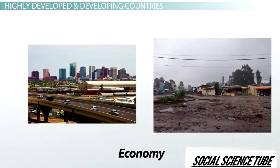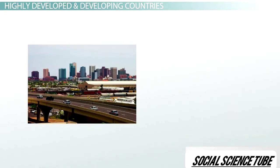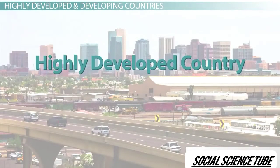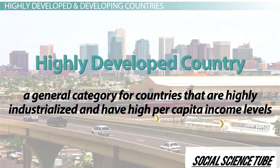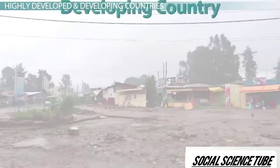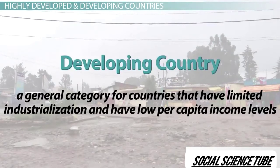The economies of these two countries are one major characteristic that sets them apart. The United States is considered a highly developed country, a general category for countries that are highly industrialized and have high per capita income levels. Ethiopia, on the other hand, would be considered a developing country, a general category for countries that have limited industrialization and have low per capita income levels.